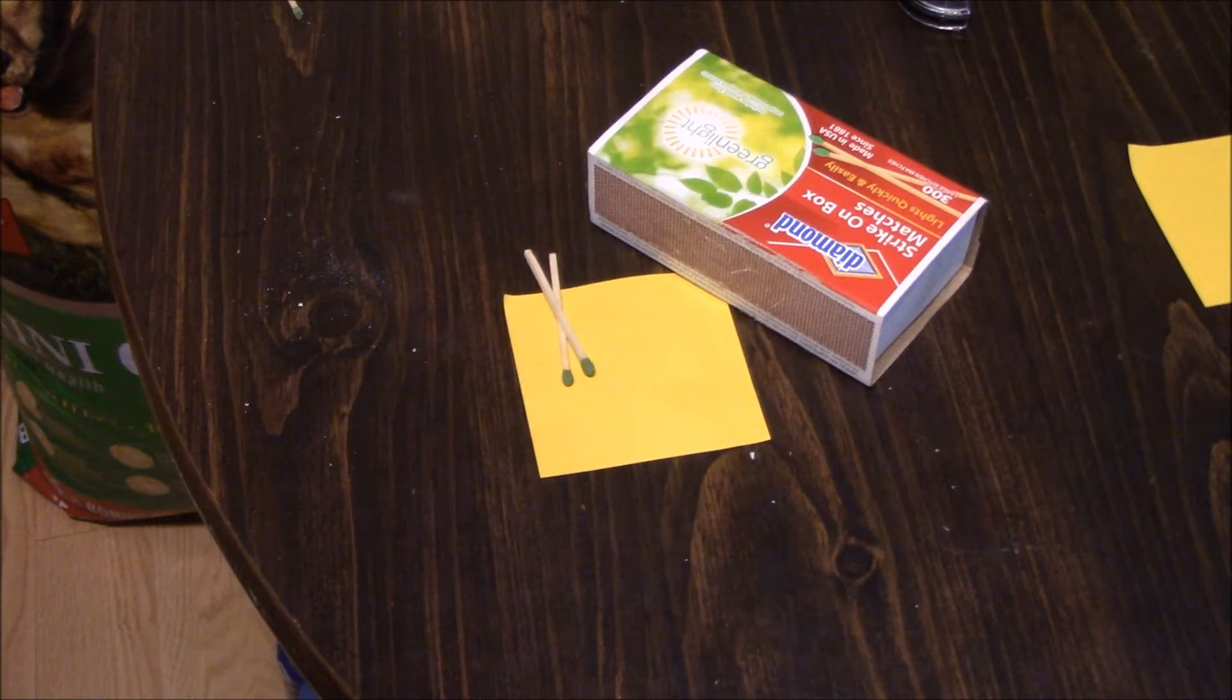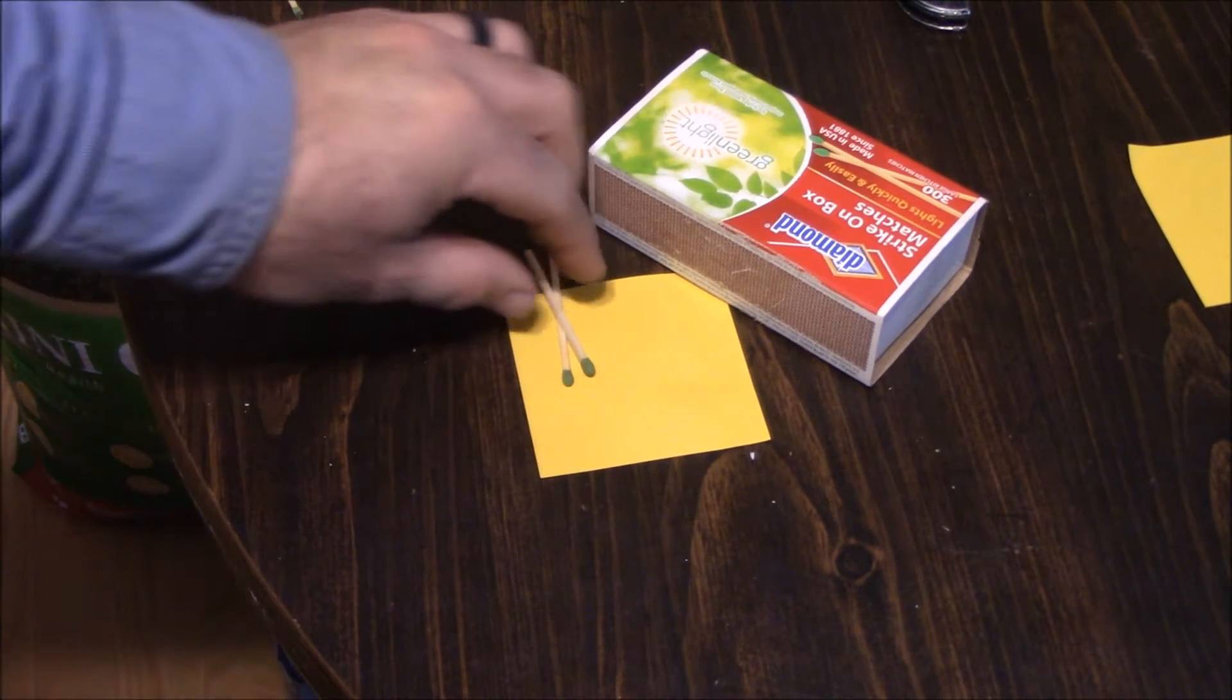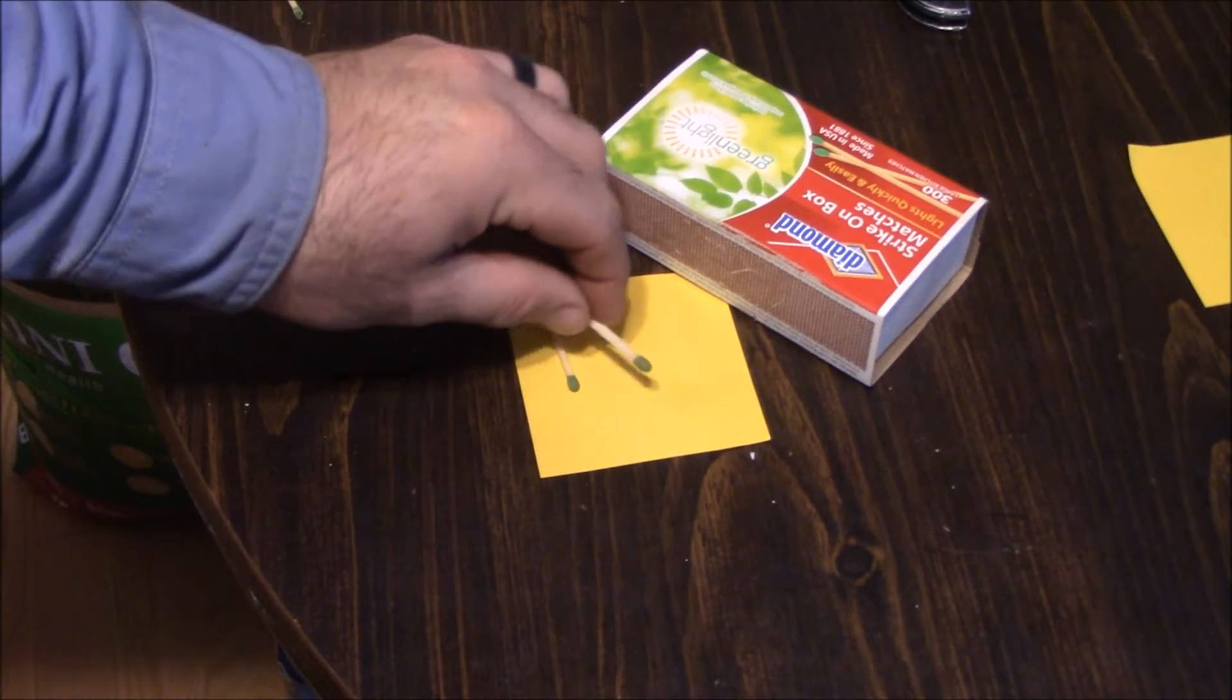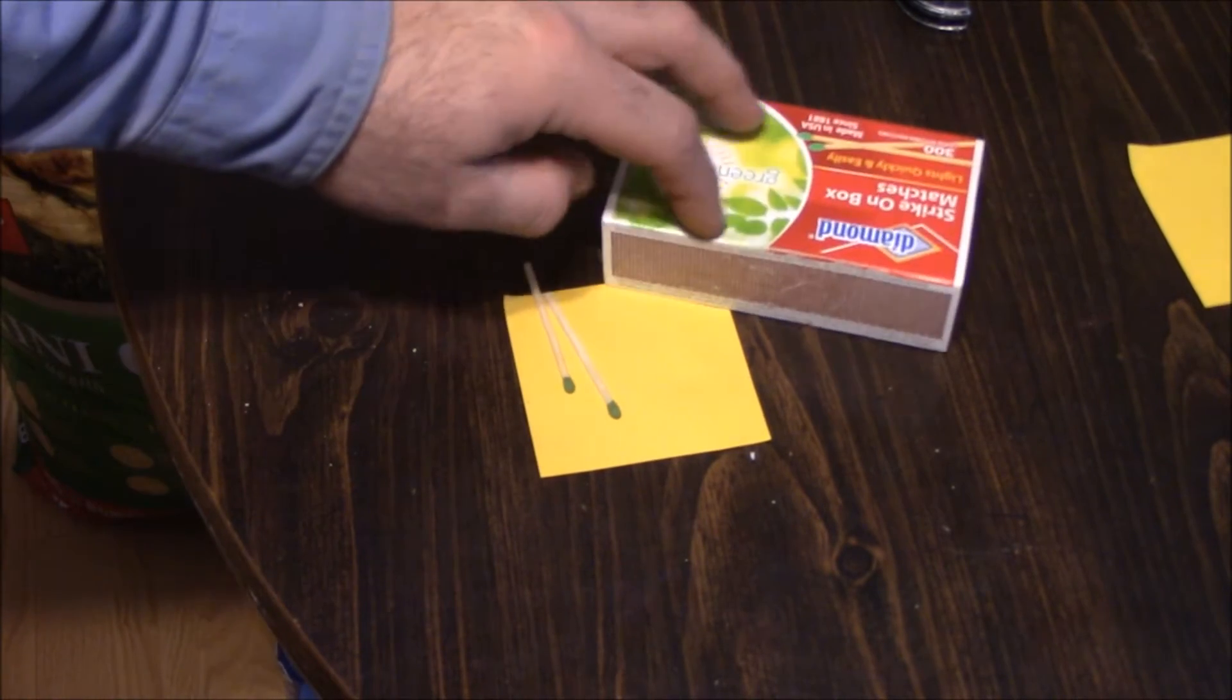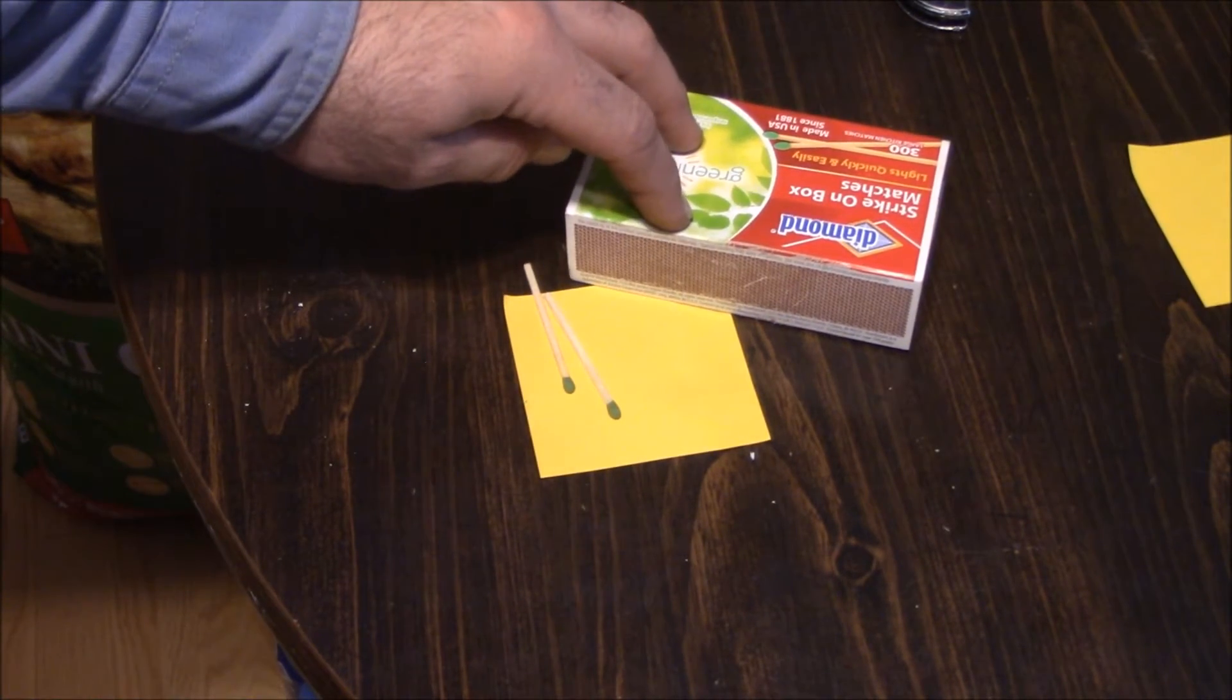Now the reason this experiment works so well is because of the extreme reaction between the potassium chlorate on the end of your matches and the red phosphorus on the side of your box that you scratch it against.